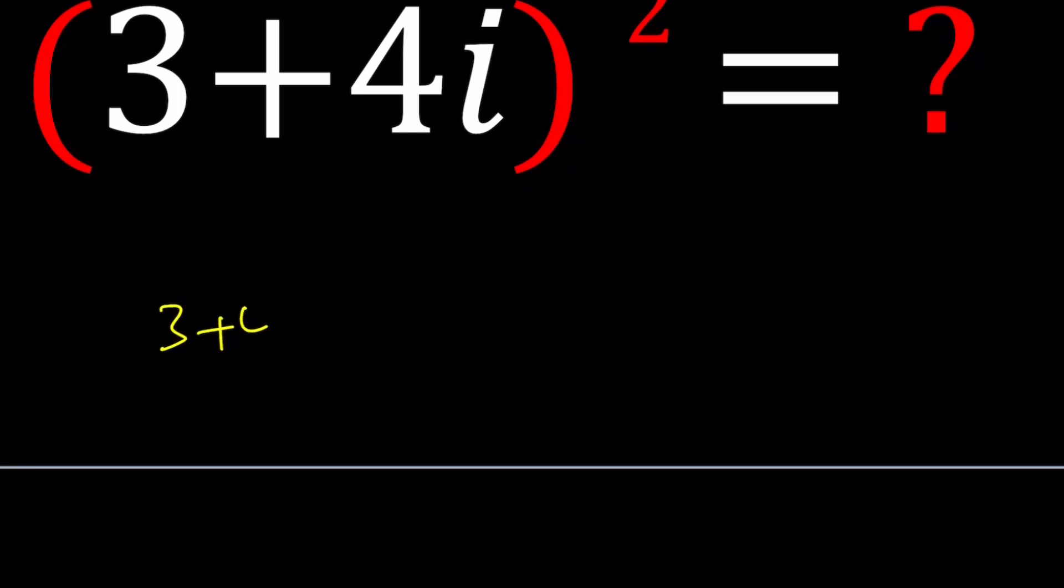So if the square root of 3 plus 4i is a complex number which can be written as x plus yi, and remember, if you find one of the square roots, the other one is going to be the opposite. Square root of 9 is 3, but if you think in a complex sense, it could be 3 and negative 3 because when both numbers are squared, we get 9. So let's square both sides and we get x plus yi squared equals this.